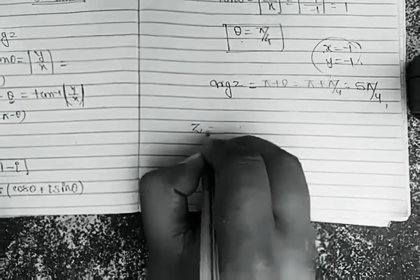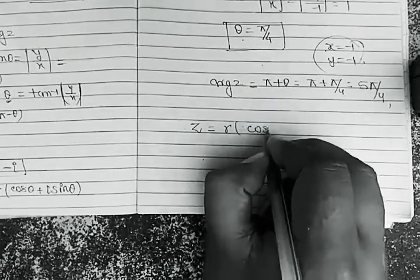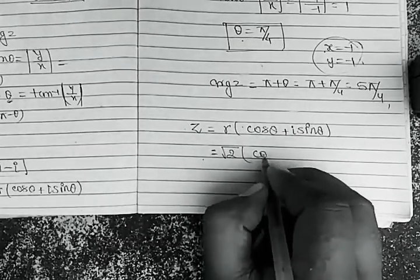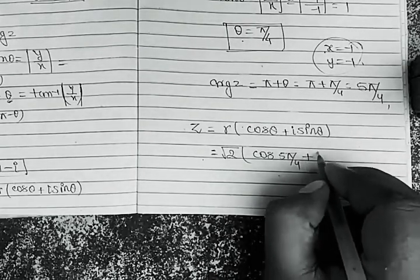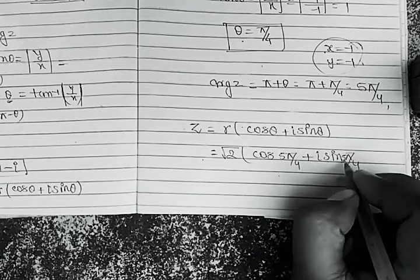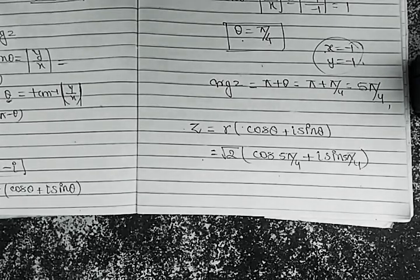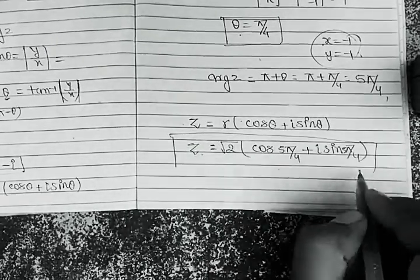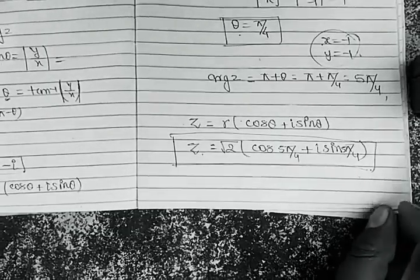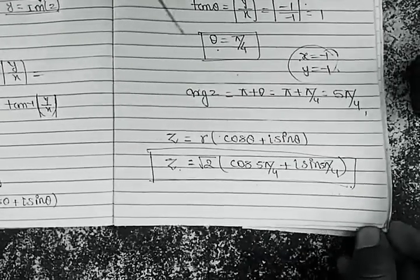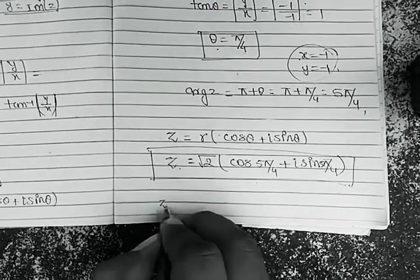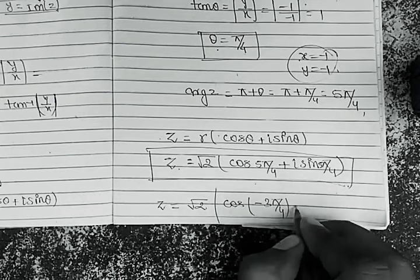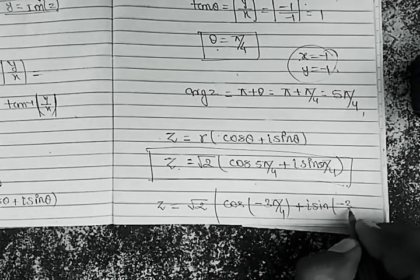Now we can write the polar form. z equals r(cos θ + i sin θ), so z equals √2 · (cos(5π/4) + i sin(5π/4)). This is the final polar form. We can also express the principal value of the argument, giving z equals √2 · (cos(−3π/4) + i sin(−3π/4)).